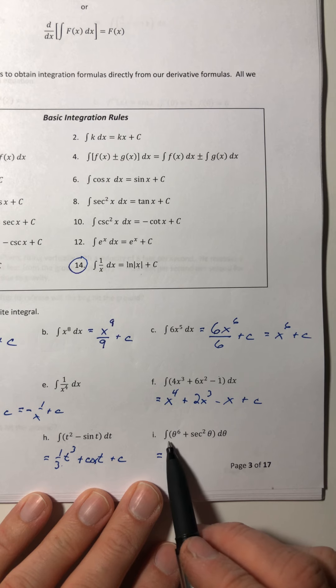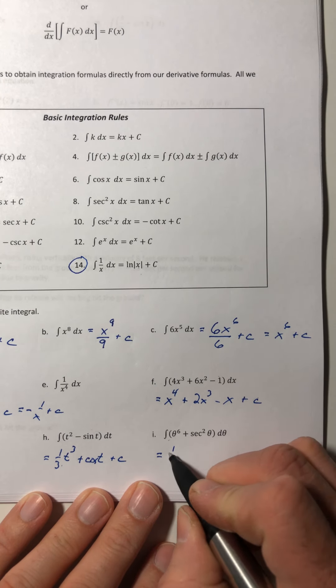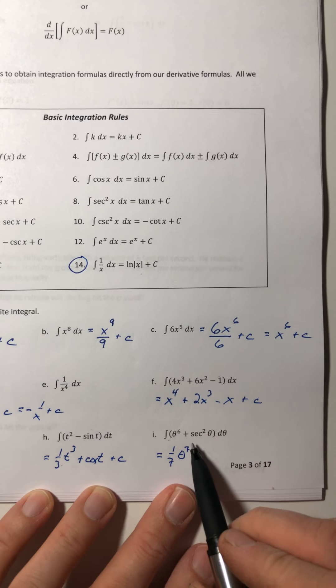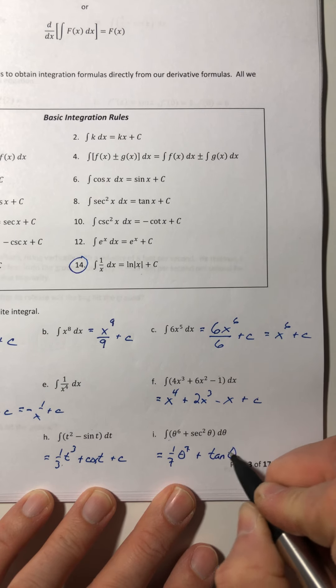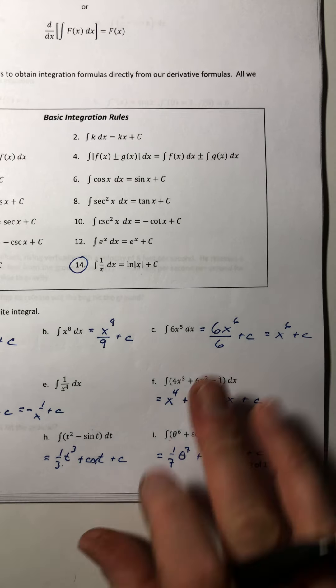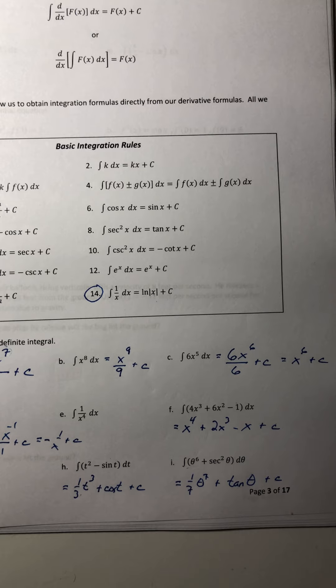And then this last one here, the integral of theta to the sixth: one-seventh theta to the seventh. And the integral of secant squared is tangent, plus C. Okay, so that'll do it for this video, and then we'll continue in the next one.